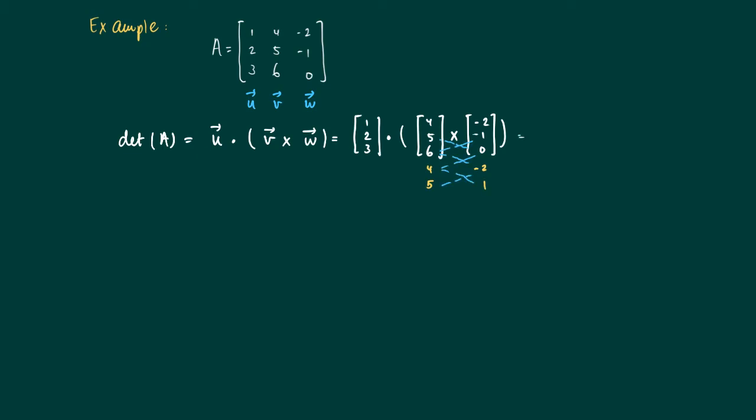We get the vector [1, 2, 3] and the inner product with the cross product which is [6, -12, 6]. So we see that we get 6 minus 24 plus 18 is 0. So this matrix is not invertible.